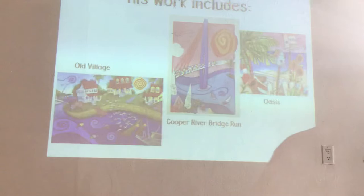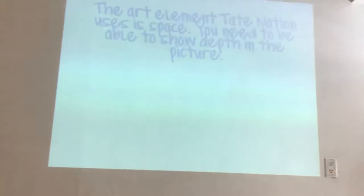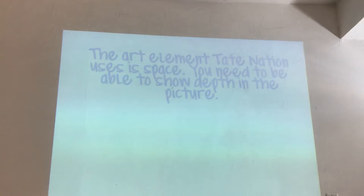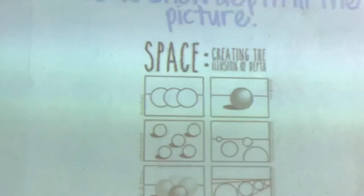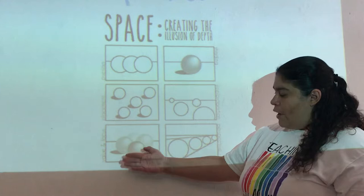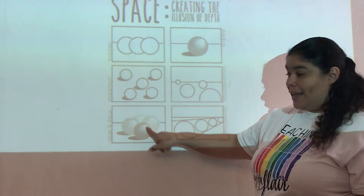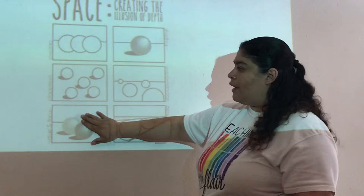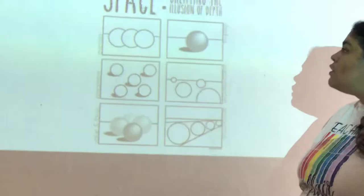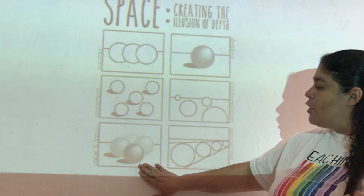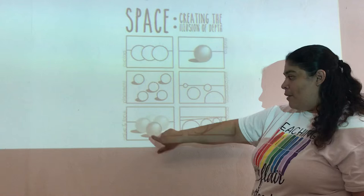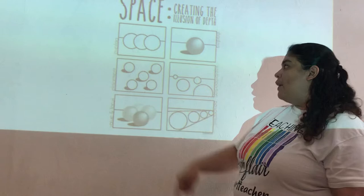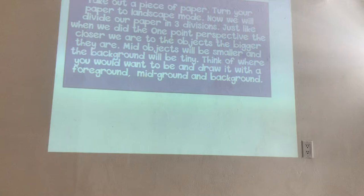So these are some of his pictures. I'm going to go ahead and go in a little bit more about our art element of space. The art element Tate Nation uses is space. You'll need to be able to show me depth in the picture. Space creates the illusion of depth — the front of the picture has more color, a deeper color; the further away, you give it a lighter color, so you don't have to press as hard when you're coloring. The front one is dark; the middle ones get a little lighter, and the further away it's very light.